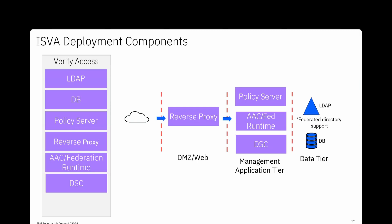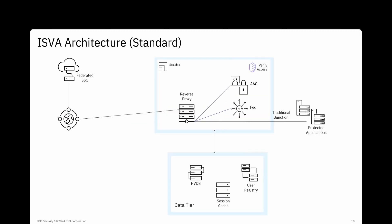The reverse proxy sits in front of integrated applications, authenticates users, and allows access to requested applications based on valid authorization. The AC and federation runtime is a Java Liberty-based application that enables advanced authentication mechanisms and different federation protocols. The distributed session cache (DSC) is the centralized session storage for the reverse proxy as well as other components like the AC and federation runtime.